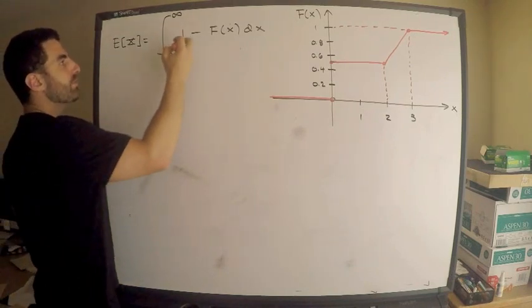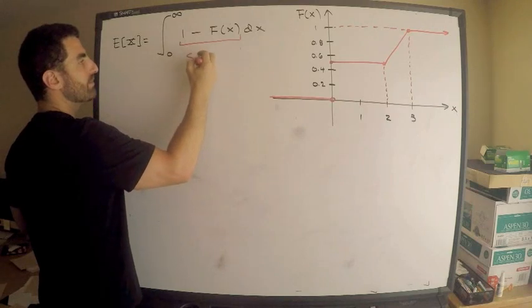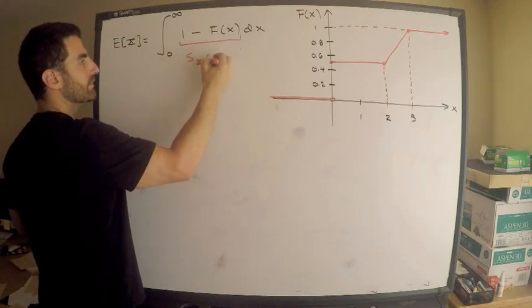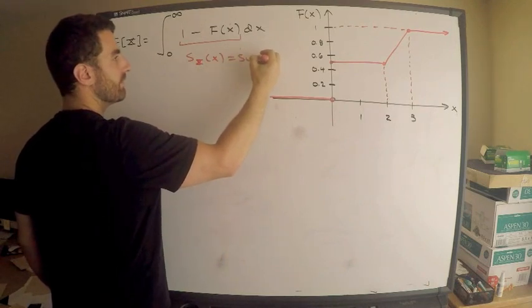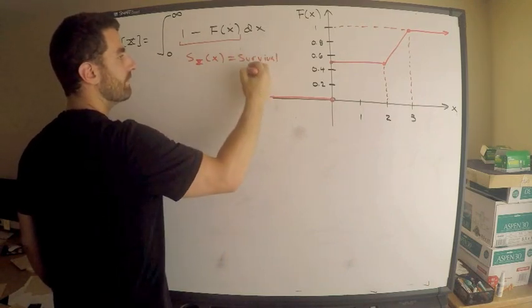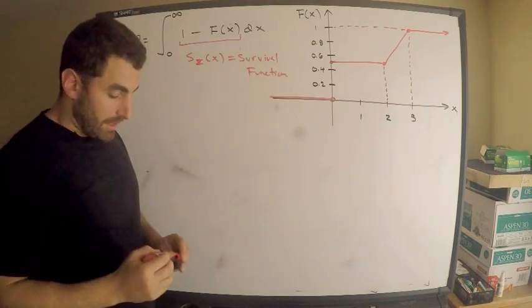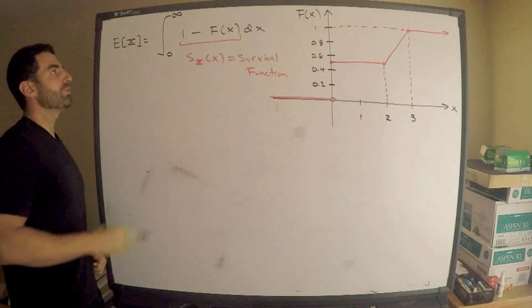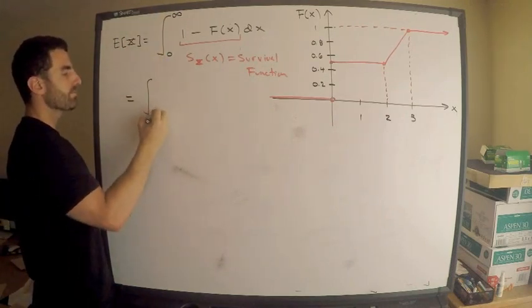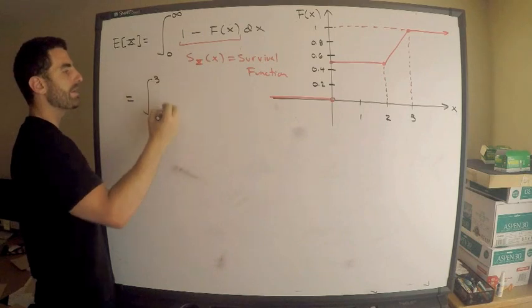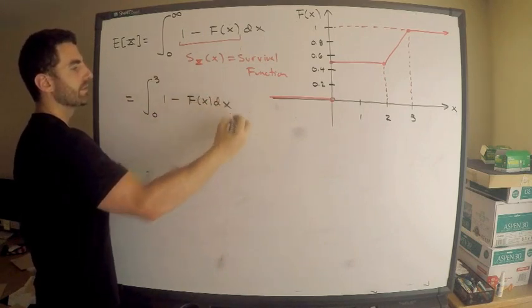And by the way, this formulation, this thing in the integrand right here, is the survival function. So, we're only going from 0 to 3. This is equal to 0 to 3 of 1 minus f of x dx.